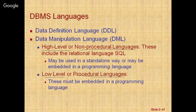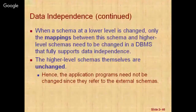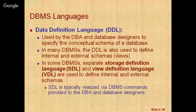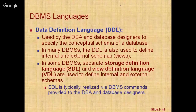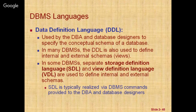The lower-level or procedural DML typically retrieves individual records or objects from the database and processes them separately. It needs to use programming language constructs such as looping to retrieve and process each record from a set of records. Low-level DMLs are also called record-at-a-time database manipulation languages because of this property.